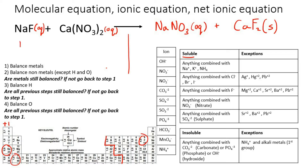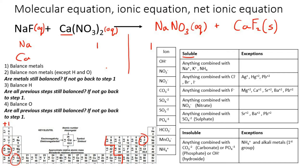On the left-hand side we have one sodium, and on the right-hand side we have one sodium. On the left we have one calcium, and on the right we have one calcium. So those are balanced — all the metals are balanced. Now we can go balance all the non-metals except hydrogen and oxygen, so that would be fluorine and nitrogen.